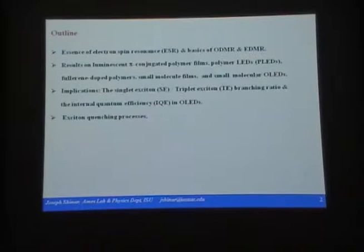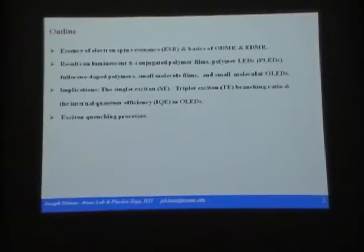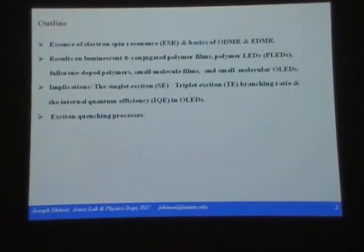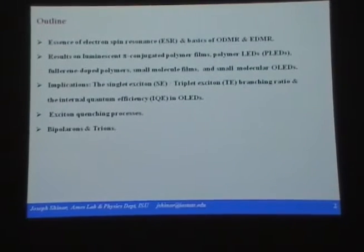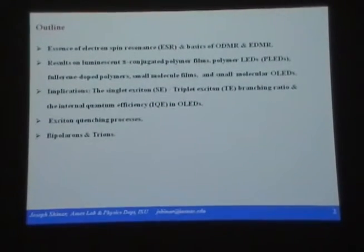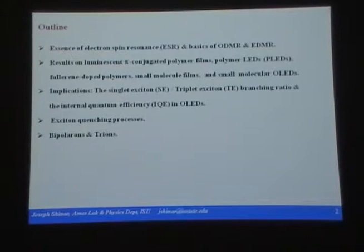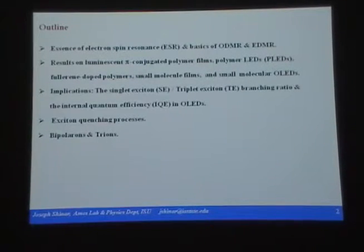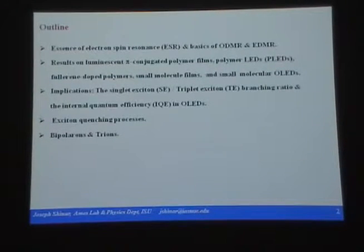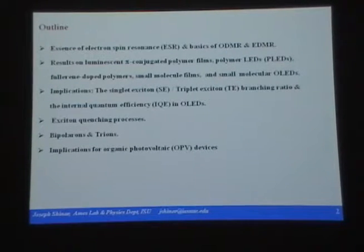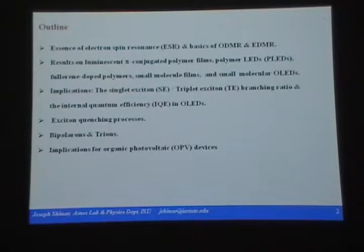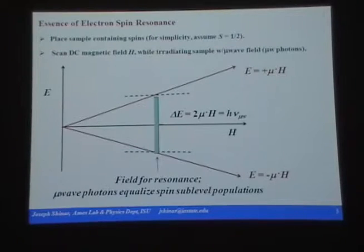We'll talk about exciton quenching processes. Now remember, in OLEDs and OPVs, sometimes we refer to opposite things. These are basically processes that kill the excitons, whether by dissociation or by giving up energy to something else. We'll talk about bipolarons and trions, and then again implications for OPVs, including concluding remarks.